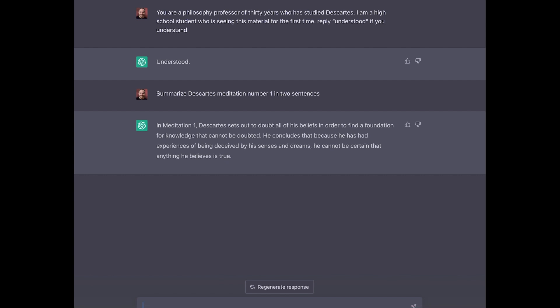Here we go. It's told us that Descartes sets out to doubt all of his beliefs, trying to find a foundation for knowledge that can't be doubted. Man, that is perfect. That is exactly the sort of, in a nutshell, summary that we're looking for here. That's exactly what he's doing. And then it goes on to say, that's what he's doing. Here's what he concludes. Because he's had experiences of being deceived, he can't be certain that anything he believes is true. Terrific. That's exactly what's going on. And now that provides a nice backdrop against which you can zoom in further.